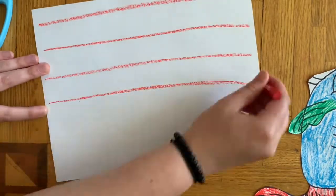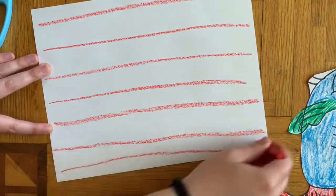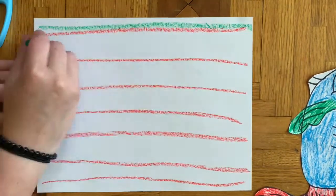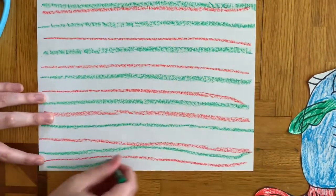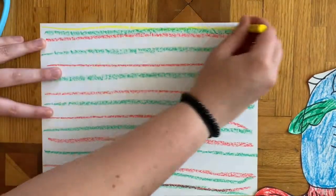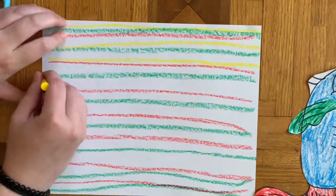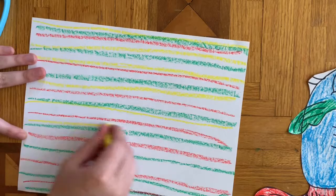I started with one color and made as many stripes as I wanted on the page, and then I did the next color and did stripes with that color as well. Then you grab your third color and make stripes with that color, filling in the white spots as you go.